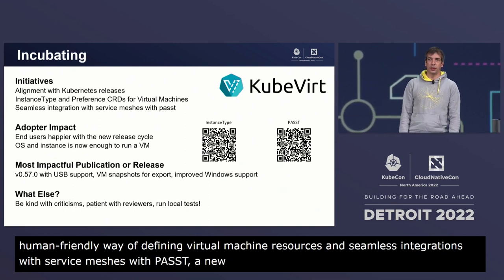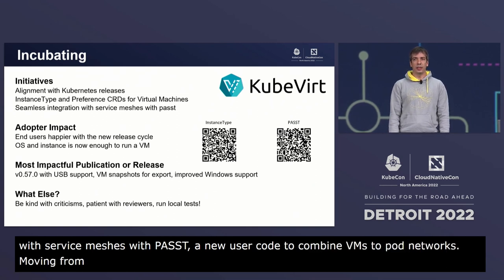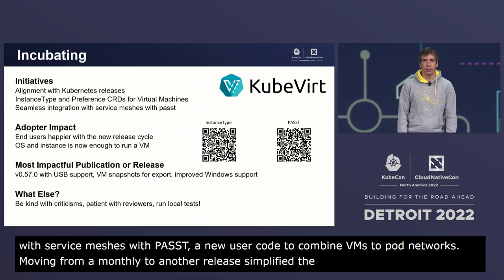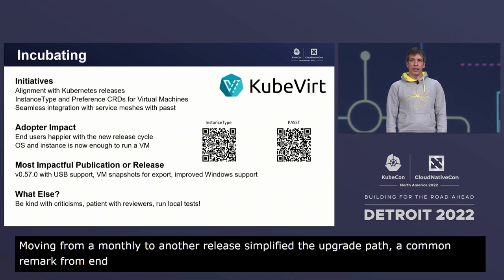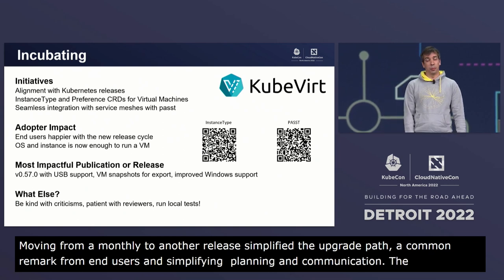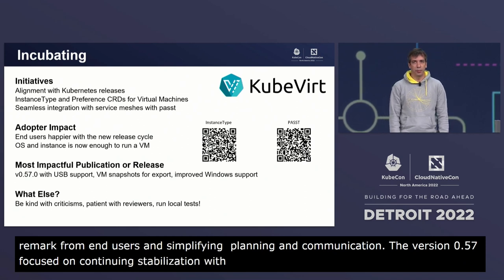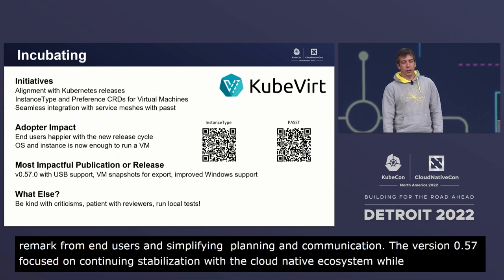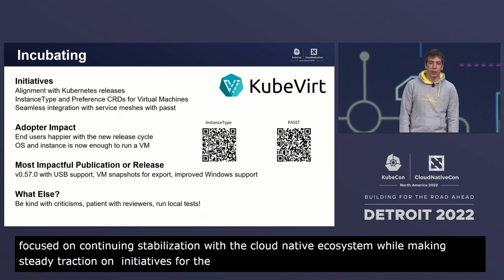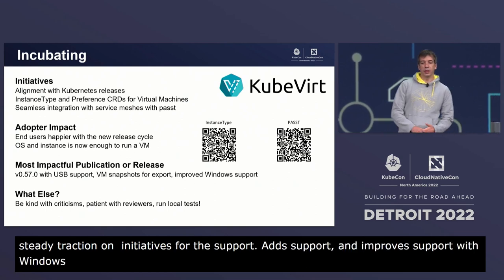Moving from a monthly release cycle to alignment with the Kubernetes release has simplified the upgrade path, which was a common remark from end users, while also simplifying planning and communication. Version 0.57 focuses on continuing stabilization and integration with the broader cloud native ecosystem while making steady traction on future initiatives. It adds USB support, VM snapshots as an export resource, and improved virtualctl support with Windows consoles, expanding functionality for day-to-day operations.